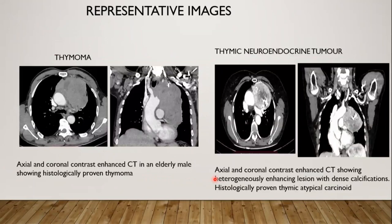Coming to a few representative images. Thymoma is the most common primary neoplasm of the thymus, seen in 50 to 60 years. On contrast-enhanced CT, we can see a well-defined soft tissue attenuation lesion in the anterior mediastinum. They usually show a cross-asymmetry to one side of the mediastinum. 30% of the lesions can be locally aggressive or invasive.